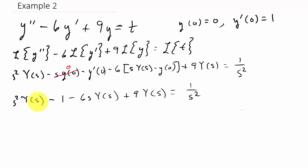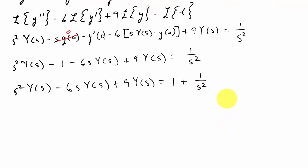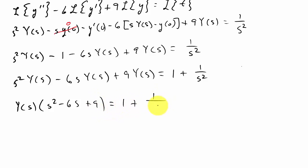Now I have to solve for Y(s), so I need to move the one over. That gives me s²·Y(s) minus 6s·Y(s) plus 9·Y(s) equals 1 plus 1 over s². Here I can factor out Y(s), so I get Y(s) times (s² minus 6s + 9) equals 1 plus 1 over s².